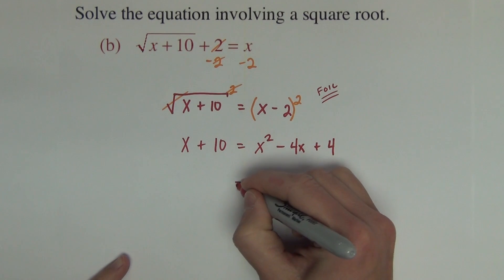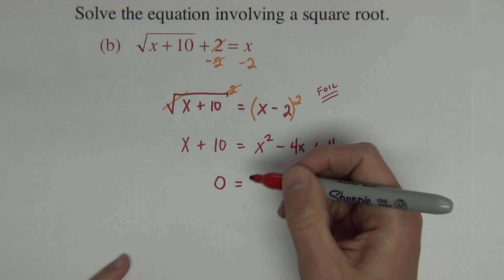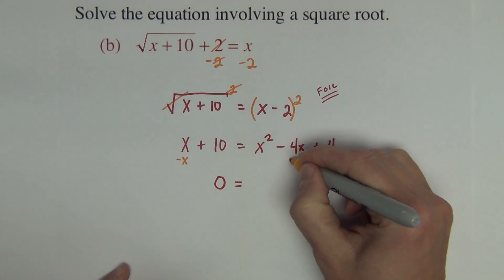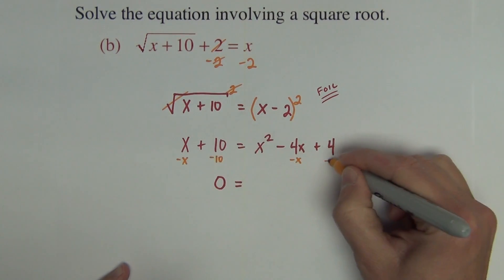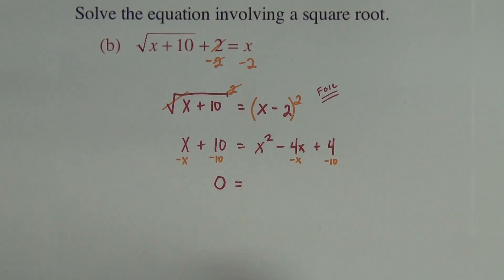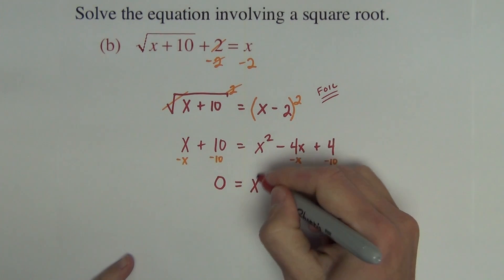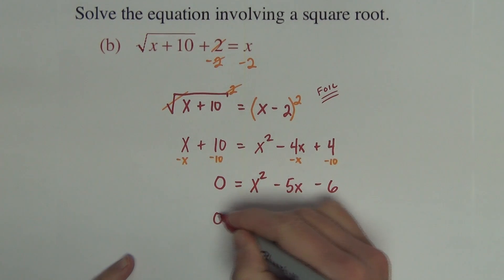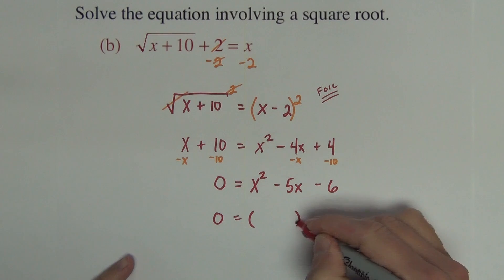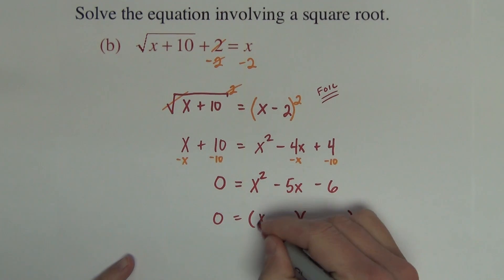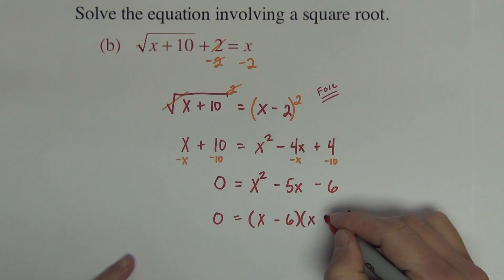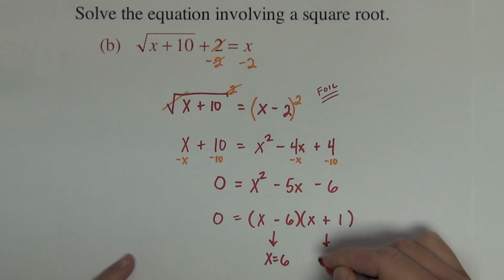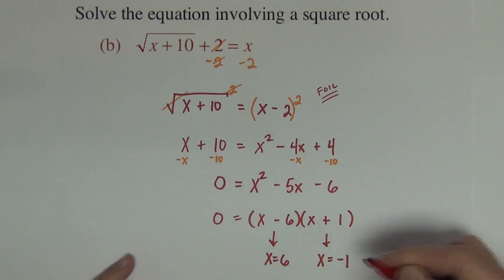With the quadratic equation, I like them equal to zero. So I subtract the x and subtract the 10, resulting in x squared minus 5x minus 6 equals 0. I'm going to try to factor that, which factors as x minus 6 times x plus 1, giving x equals 6 or x equals negative 1.